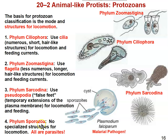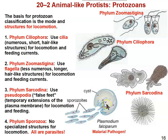Then we have the phylum Sporozoa. Sporozoans are classified not by their mode of locomotion, but by their lack of one — they're all parasites. Parasites really don't need to move; the environment moves them. They're passed from person to person; for example, this is the pathogen that causes malaria — Plasmodium falciparum. Malaria is passed from person to person by mosquitoes, which act as a vector. Sporozoans have neither cilia, flagella, nor pseudopodia, and they're all parasites or pathogens.